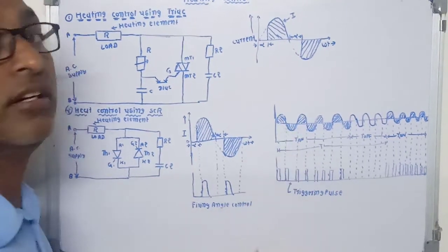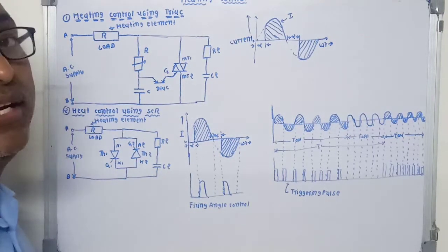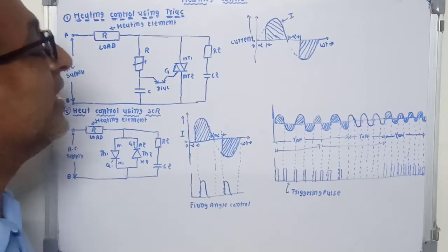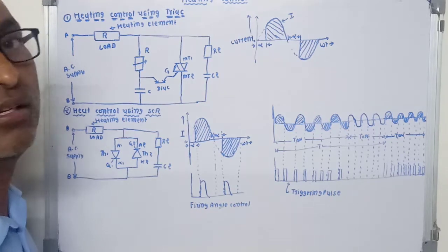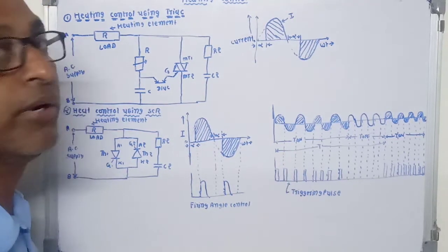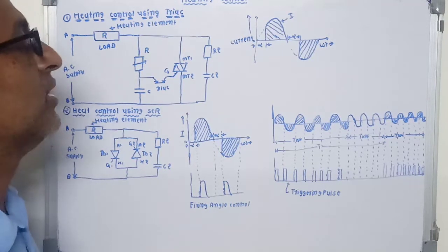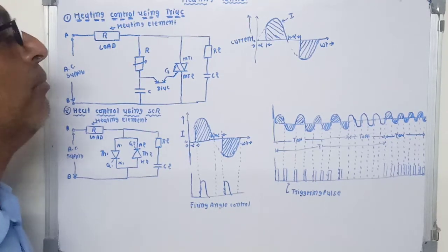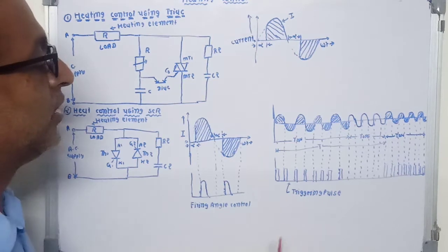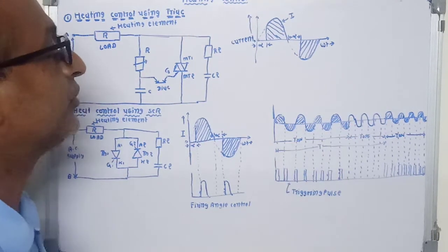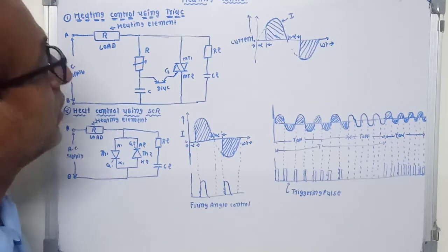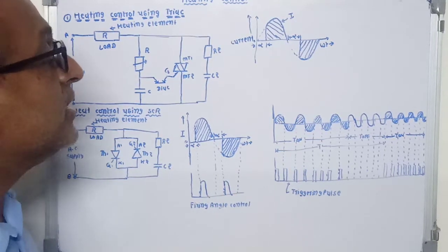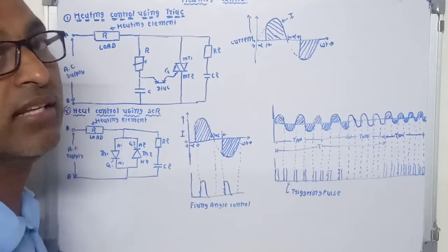To overcome this power factor problem, a second method is used. In this method, the thyristor is turned on for some input cycles and turned off for other cycles, eliminating the power factor problem. The thyristor operates at full half cycles with firing angle alpha equal to zero, so there is no effect on the power factor. This method is called integral cycle control, and heating control is achieved by changing the turn-on and turn-off periods.